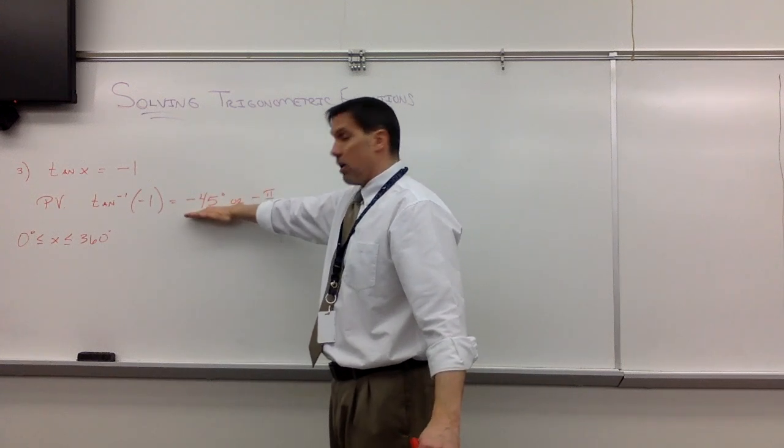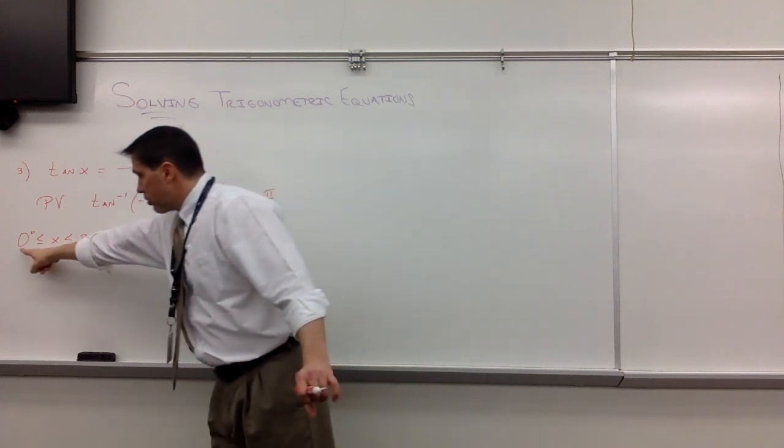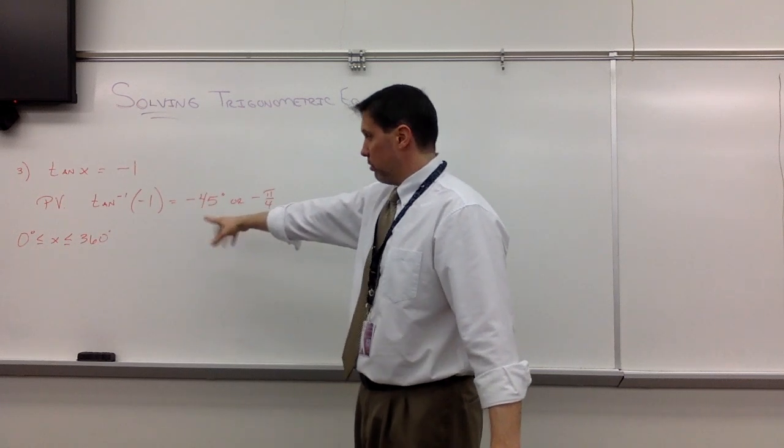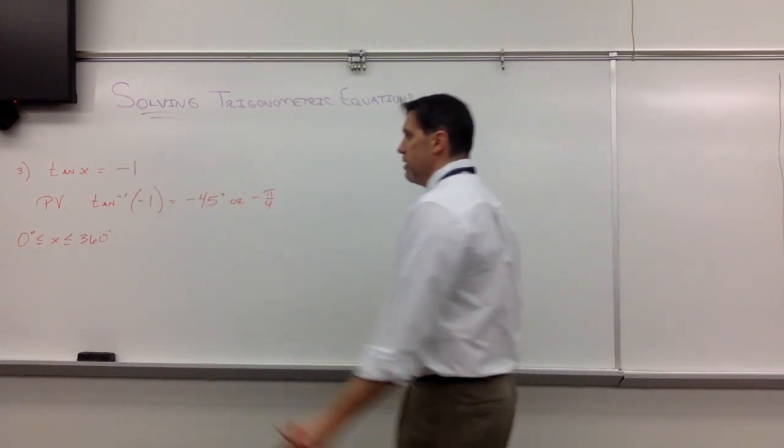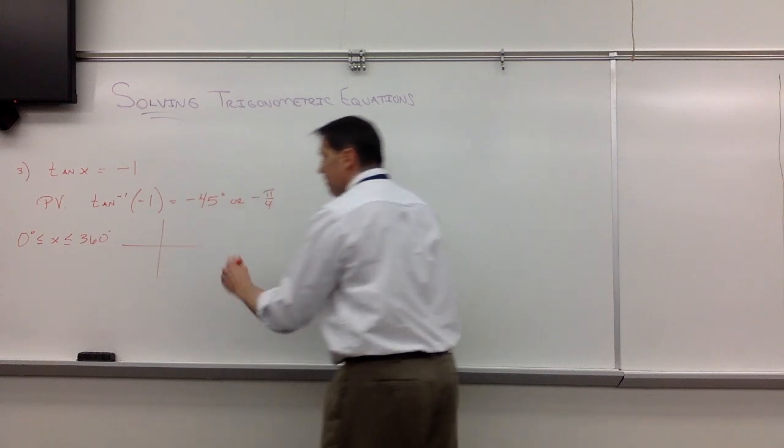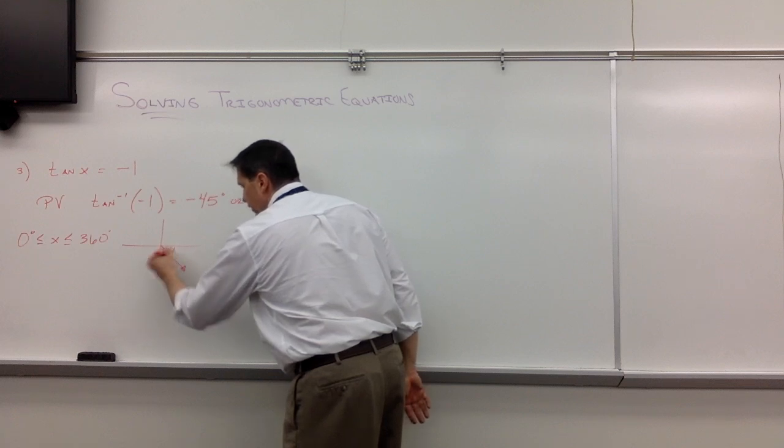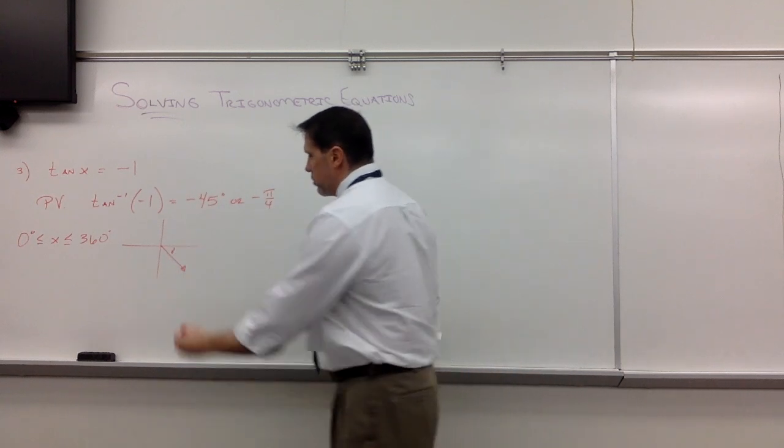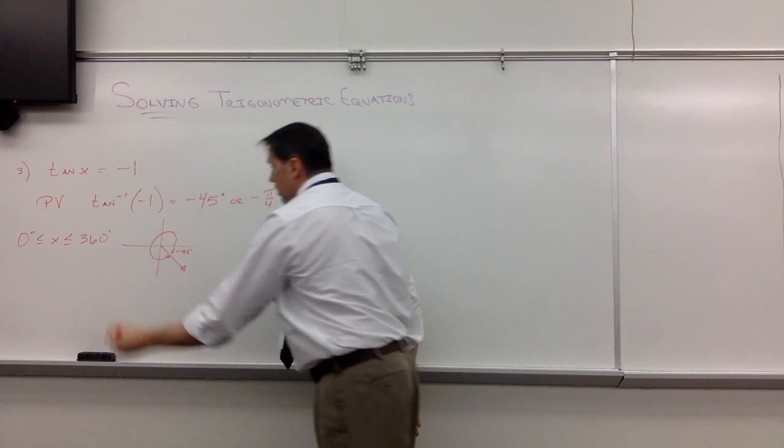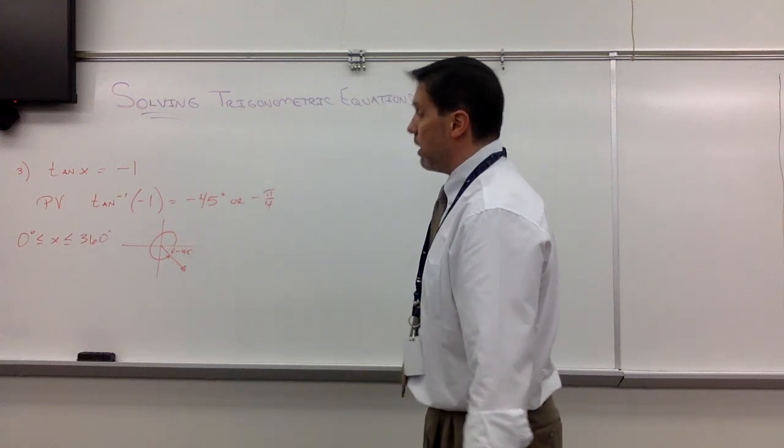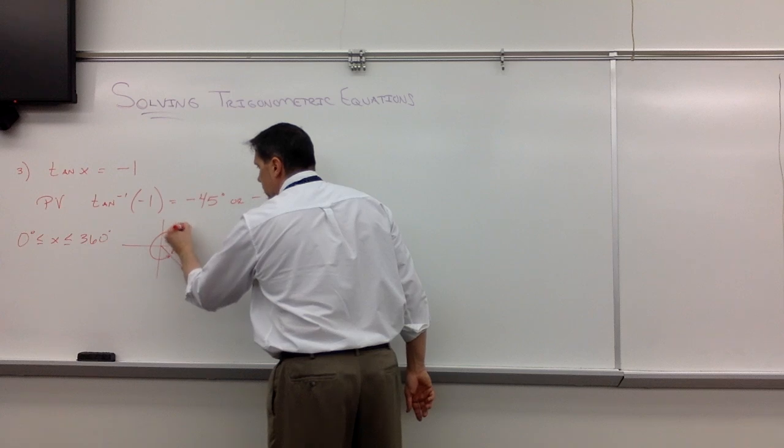Not always does the principal value give you one of your solutions. If you look at negative 45 degrees, unfortunately that is not between 0 and 360. It's less than 0. You say, well, that was a huge waste of time. No, we just have to give the alternate version. Negative 45 throws us into quadrant 4. We just have to go with the positive way around. In other words, we're going to go counterclockwise and we'll get 315 degrees.